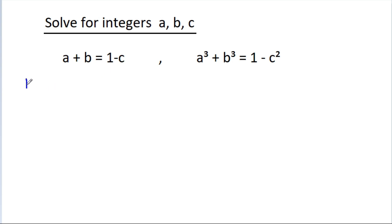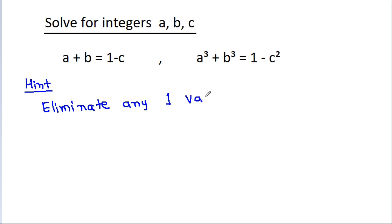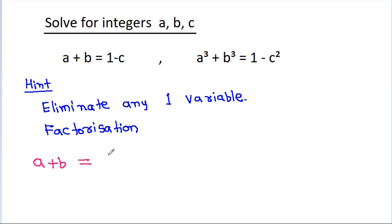So if you want a hint, in this type of questions, the strategy is to eliminate one variable and use factorization. So we have a minus b is equal to 1 minus c. Eliminating c will be easy. From here, we can get c is equal to 1 minus (a plus b).